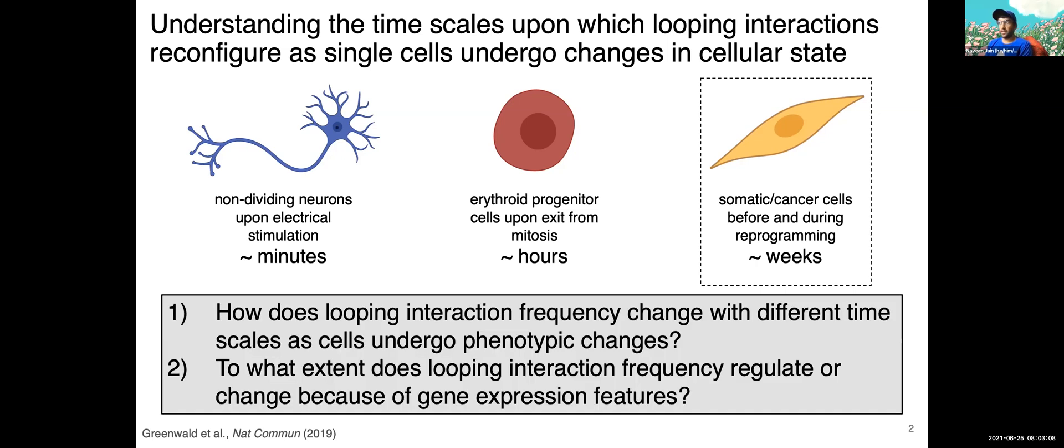In terms of major questions that this work is trying to ask by using quantitative methods and new techniques, those questions include how does looping interaction frequency change with different timescales as cells undergo these changes, and to what extent can we connect looping interaction frequency with changes in gene expression. Truth be told, I'll only really be focusing on looping interactions when discussing future considerations for all I'll be presenting. So you can look forward to that near the end of the talk.